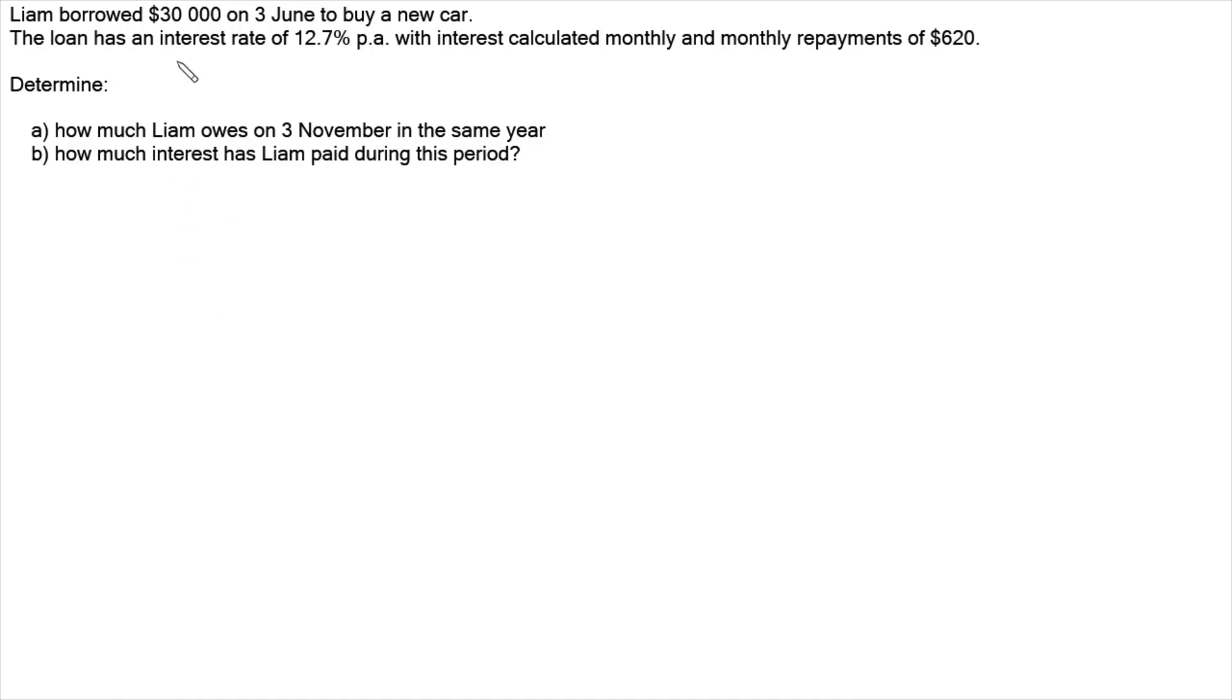Hi. In this video, I'm looking at this problem where we've got Liam who's borrowed $30,000 to buy a new car on the 3rd of June. His loan has an interest rate of 12.7% per annum with interest calculated monthly and monthly repayments of $620. We want to work out how much Liam owes on the 3rd of November in that year and how much interest Liam has paid during this period.